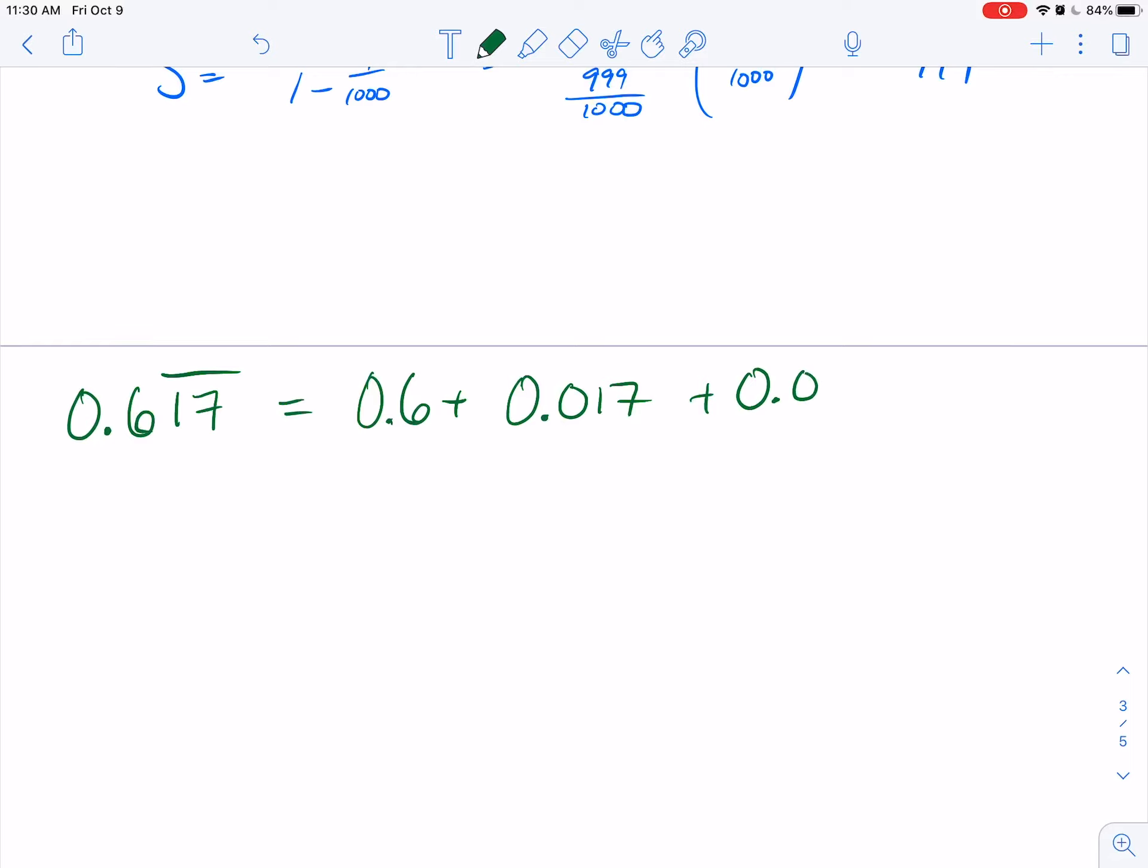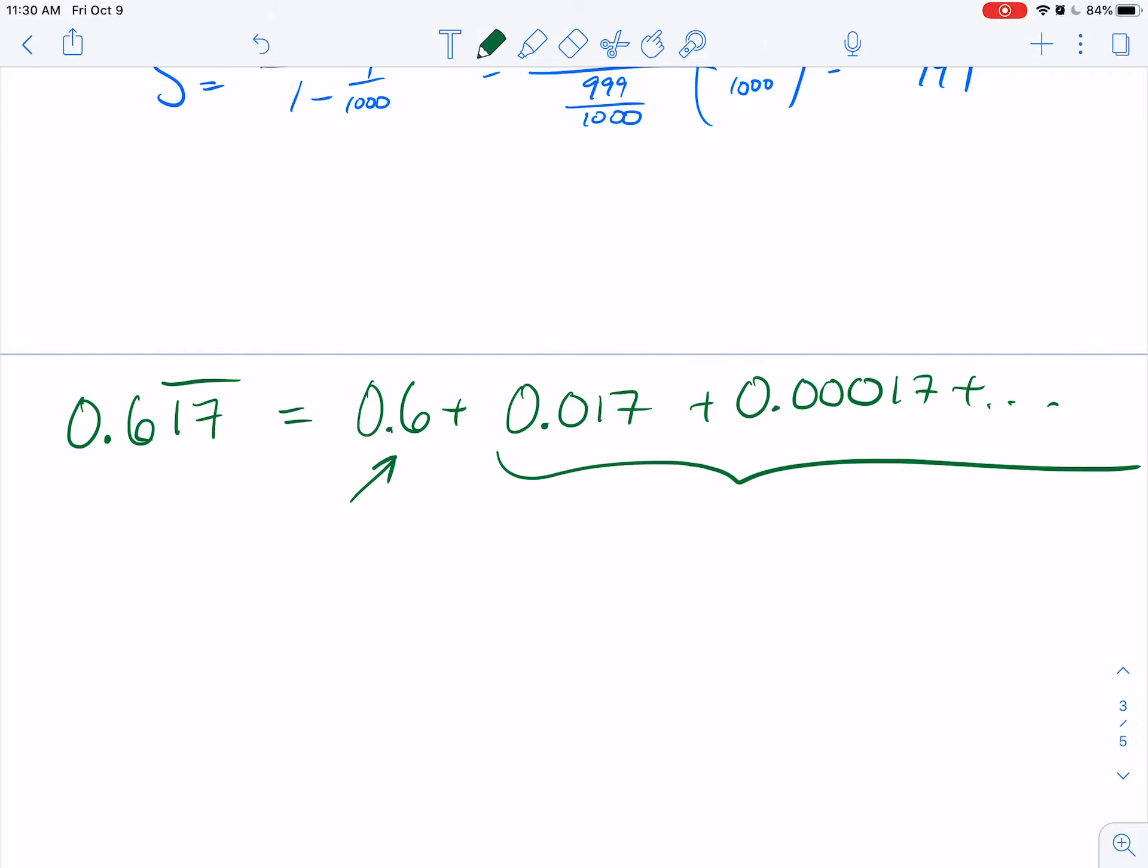All of these terms would now be 0.00017... and it keeps going. So what happens here is this part is the infinite geometric series, and then the 0.6 part is just going to be added to it.